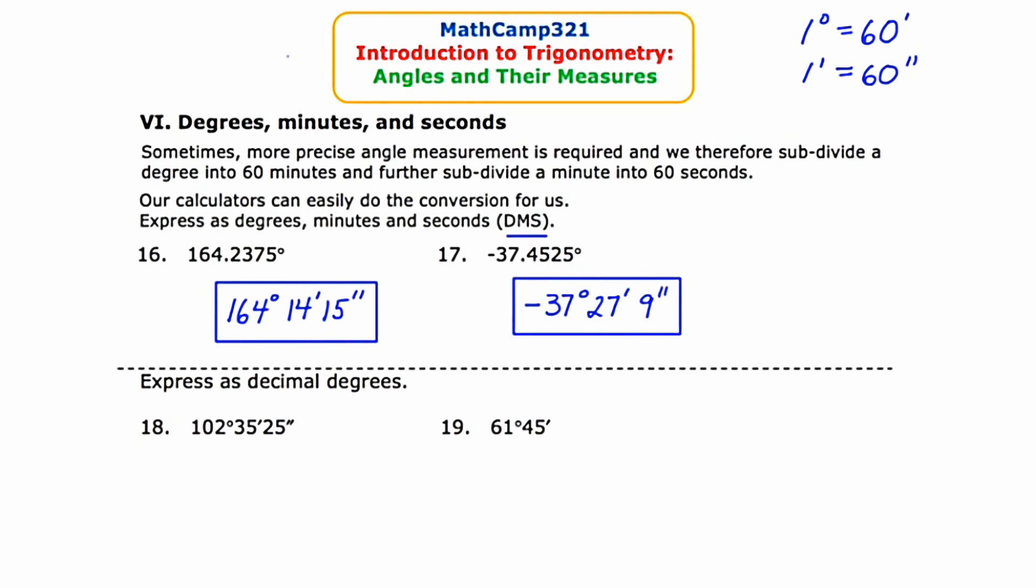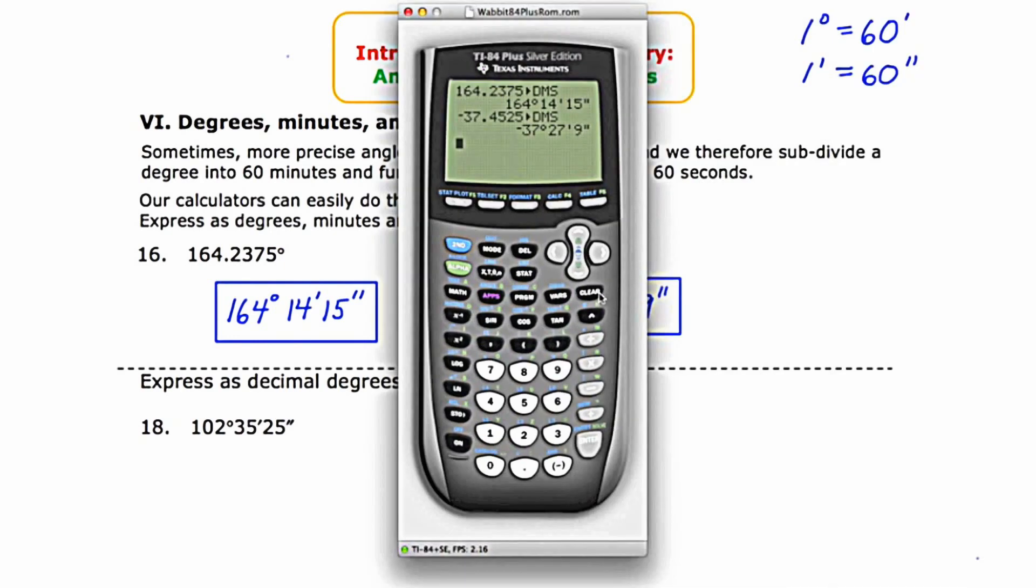They give us degrees, minutes, and seconds, and we need to go backwards to just decimal degrees. Not too difficult, especially with the use of the calculator. So I'm going to queue the calculator up and start by clearing the existing entries. The next thing I'm going to do is start with 102.